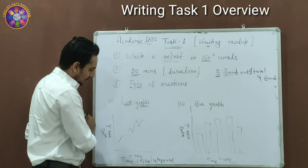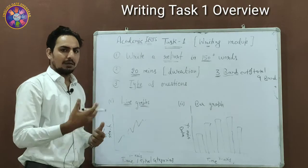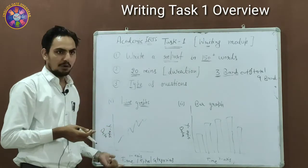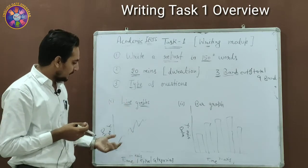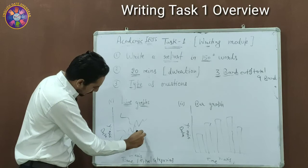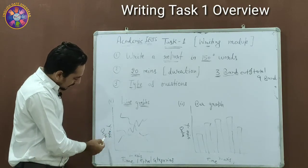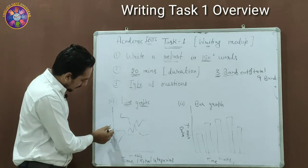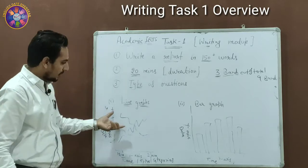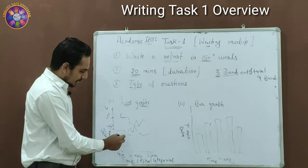The first type is a line graph. You may have seen line graphs in school but rarely had to write a report on one. A line graph can be a single graph or a combination of many graphs. On one axis there will be time categories and on the other axis there will be data — for example, 1 million to 4 million — and the time axis might go from 1990 to 2010.